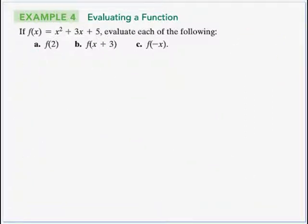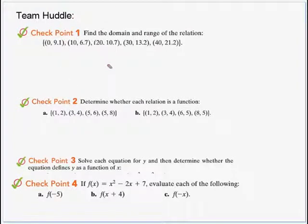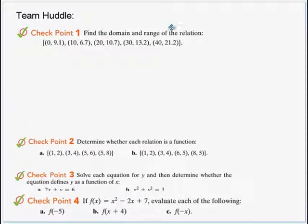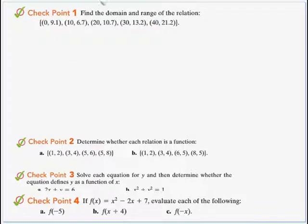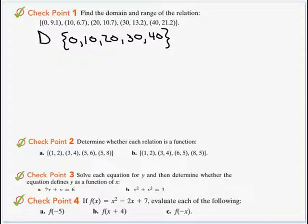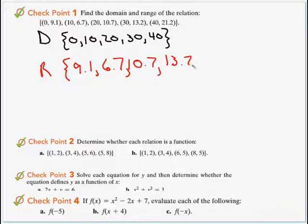Now let's check the practice problems. For Checkpoint 1, find the domain and range. The domain is all x-coordinates: {0, 10, 20, 30, 40}. The range is all second components: {9.1, 6.7, 10.7, 13.2, 21.2}. Remember, if you see a repeater, you only need to write it once.